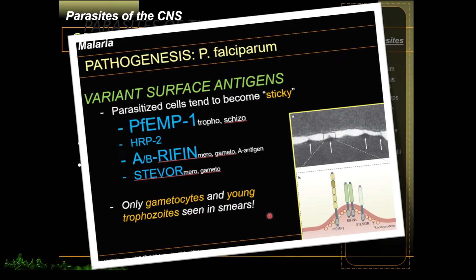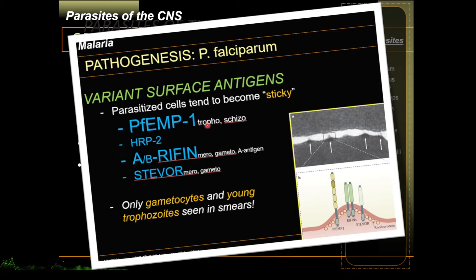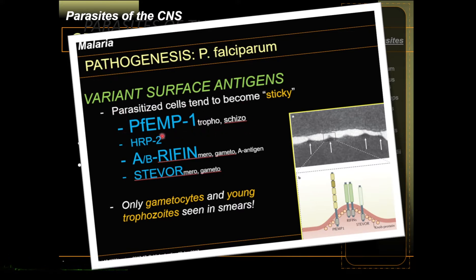This actually explains why only gametocytes and young trophozoites are seen in the malarial smear of Plasmodium falciparum. The older trophozoites and older schizonts stick to the endothelium of the brain, lungs, or kidneys. Therefore, due to PFEMP1 and since they are sticky to the endothelium of blood vessels, you don't extract them when you do your peripheral blood smear.